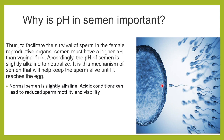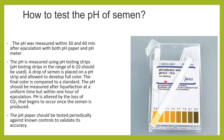An alkaline semen pH helps sperm motility and increases the viability of sperms. Whenever we are measuring the pH, it should be done within 30 to 60 minutes after ejaculation — as early as possible.